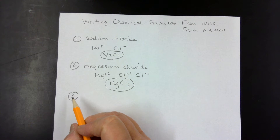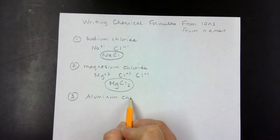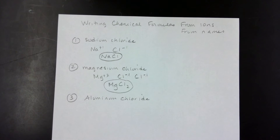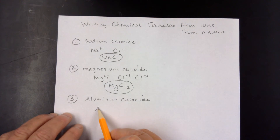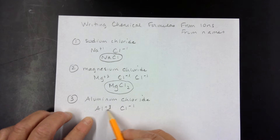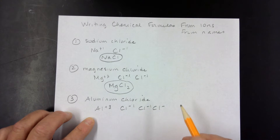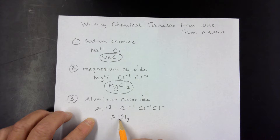Third example is aluminum chloride. Looking at the periodic table, aluminum is a plus three charge — Al⁺³. Chloride is minus one. To match a total positive charge of three, we need three chlorides. Writing that out is cumbersome, so we abbreviate with a subscript of three: AlCl₃, indicating three chlorides matched to one aluminum.